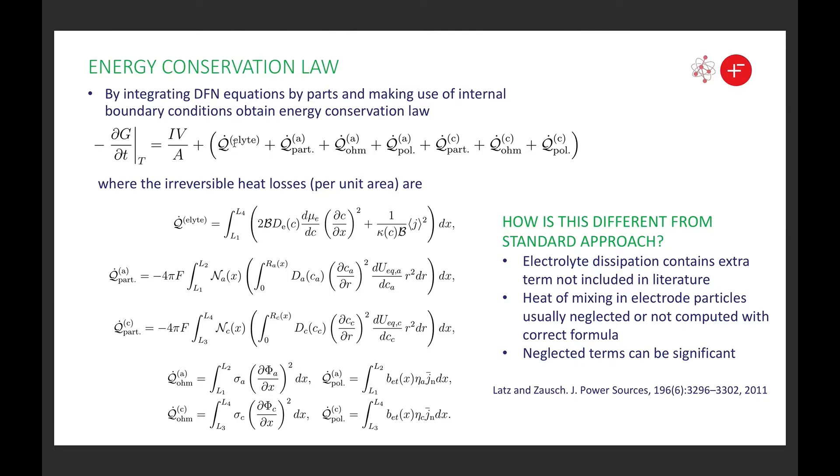This first term is the irreversible energy loss in the electrolyte. The second one is the energy loss associated with heat of mixing in the anode particles. This is ohmic losses in the binder conductivity additive matrix, and this one here is the polarisation loss across the interfaces between the electrode particles and the electrolyte. And then these are what these various terms look like.